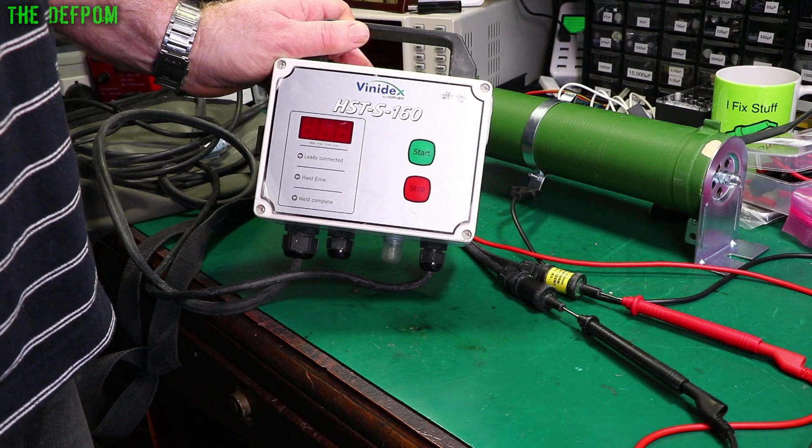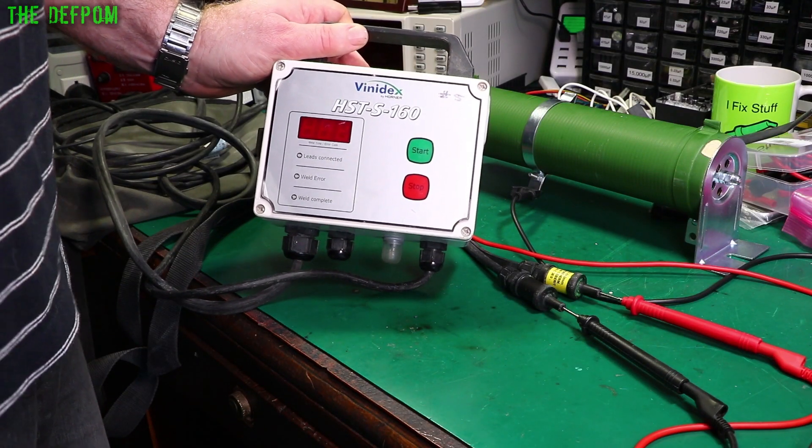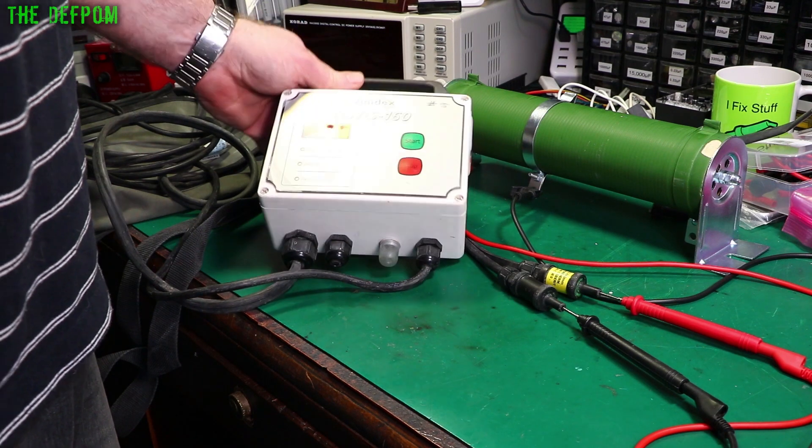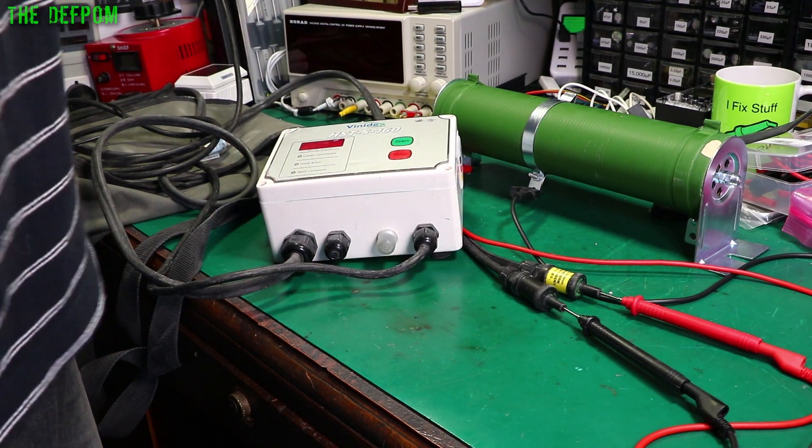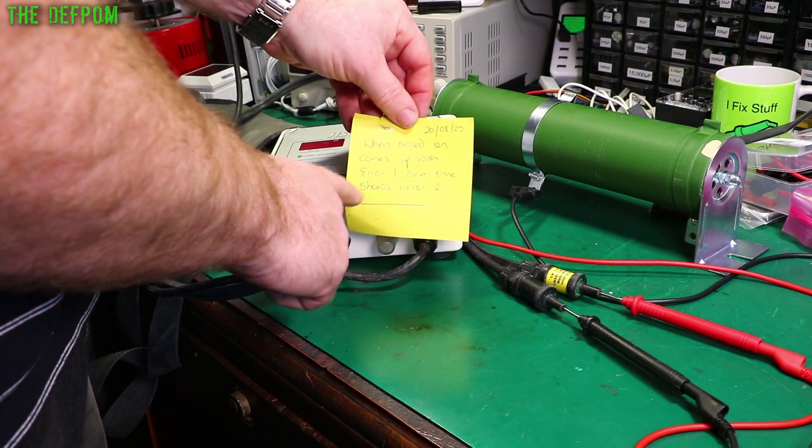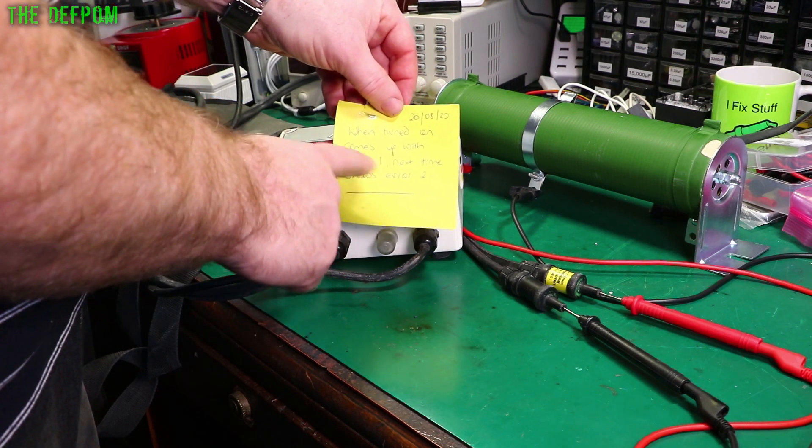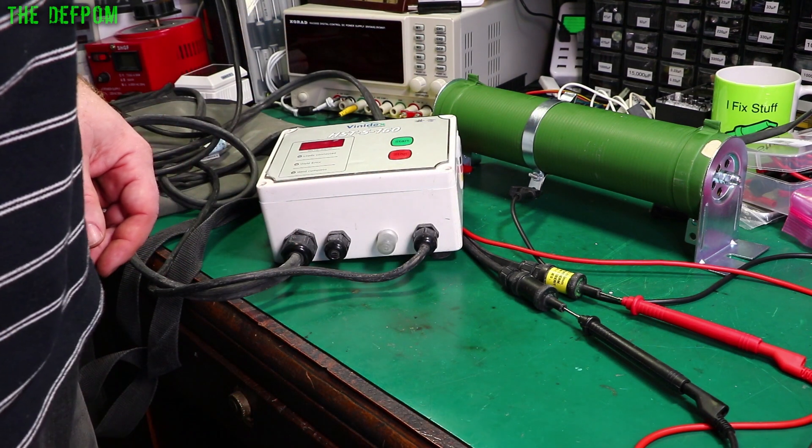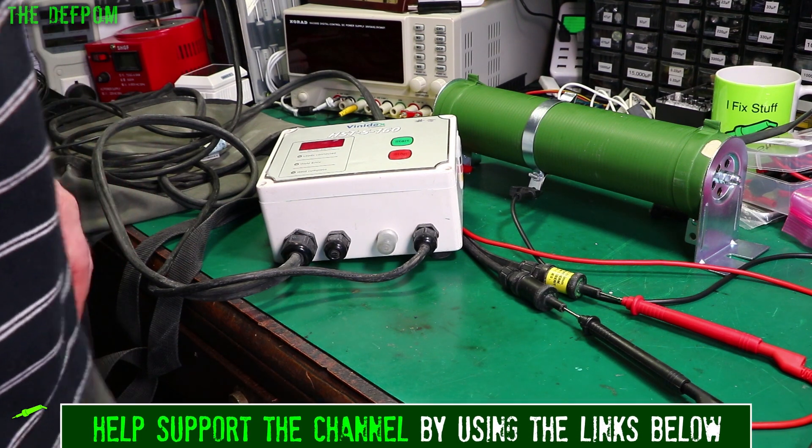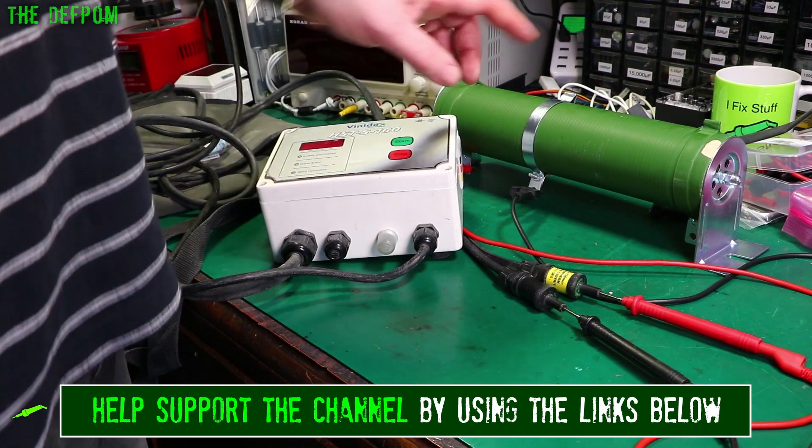I'm going to try and repair this Vinidex HST-S160 Electrofusion unit. Apparently it's given some errors. I've already tested it myself just to confirm those errors. I'll show you those in a second. So apparently it comes up with error 1, then when you do it again it comes up with error 2. Now error 1 is supposed to be a power supply failure or power supply issue, and error 2 is a welding failure because it can't detect the coil.